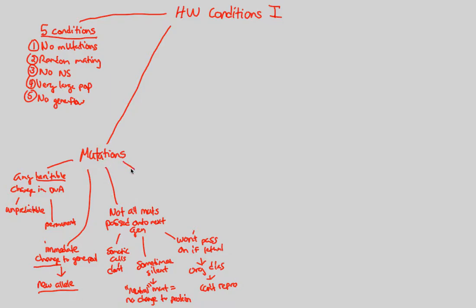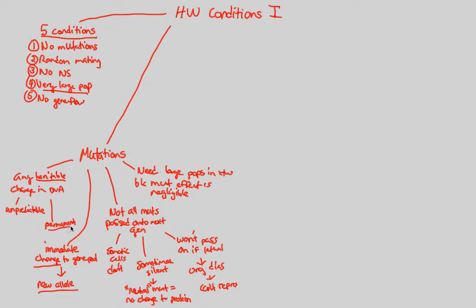Mutations in Hardy-Weinberg won't have a great influence for another reason — the requirement for a very large population. You need large populations in Hardy-Weinberg because the mutation effect becomes negligible. Though mutations are inherited, unpredictable, and permanent in nature, if one person out of one billion individuals in a Hardy-Weinberg population gets a mutation, that mutation will not change the gene pool because it's so negligible — it's one out of a billion.